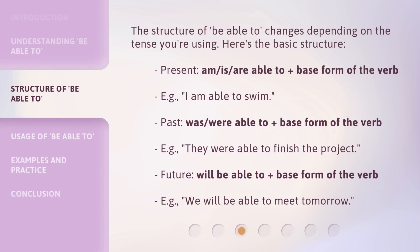The structure of 'Be Able to' changes depending on the tense you're using. Here's the basic structure. Present: am, is, are able to, plus the base form of the verb. For example: I am able to swim.